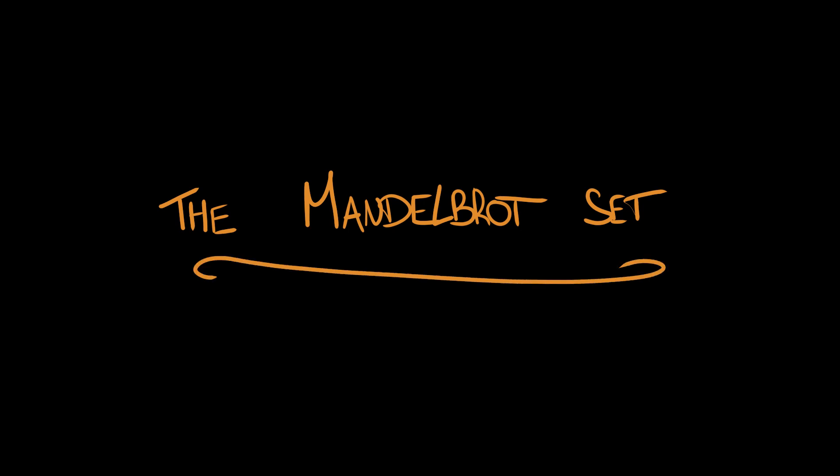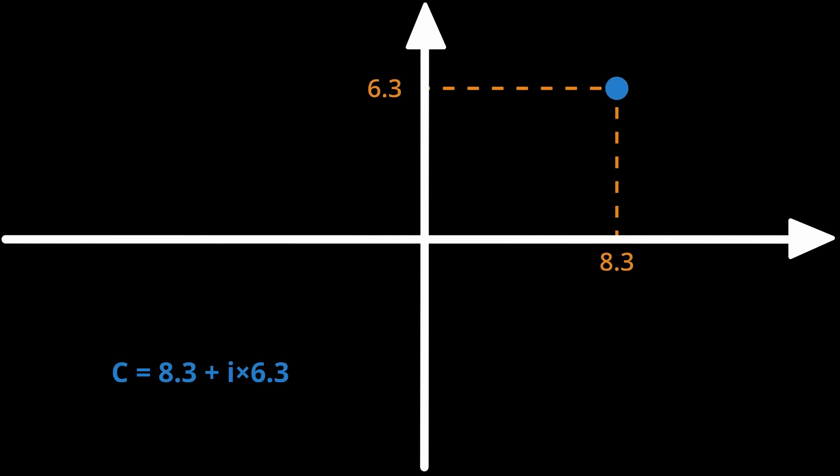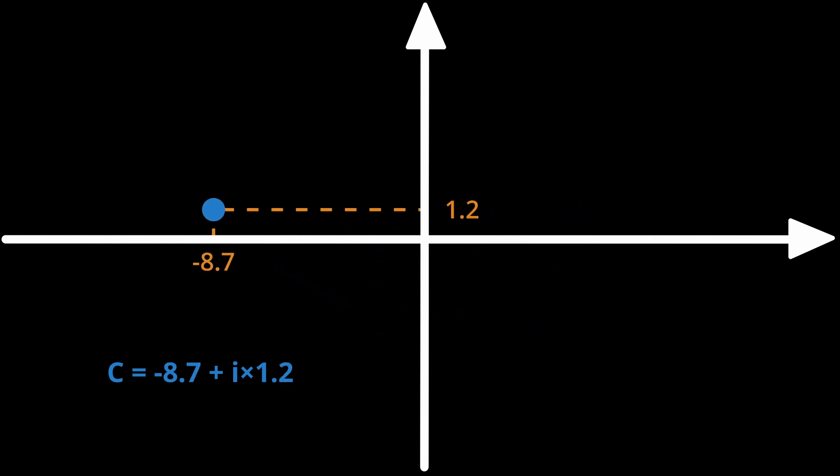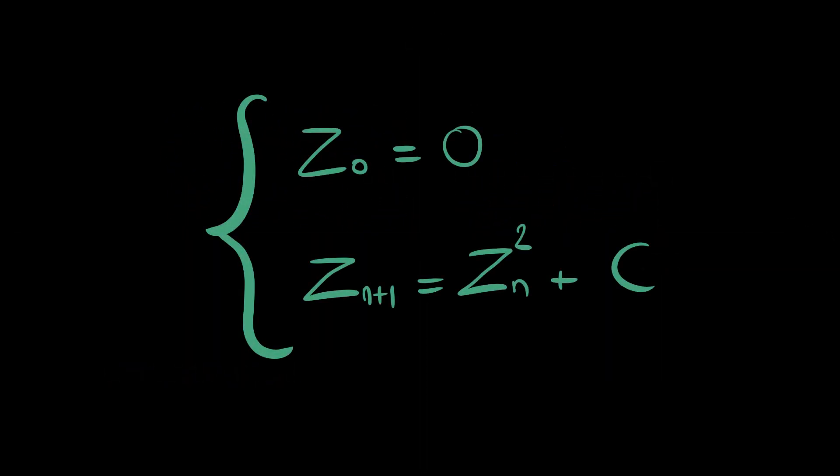From there I wanted to visualize the Mandelbrot set. The idea behind it is not that difficult. Let's consider a plane, like your screen for example. We can assign a value to each point depending on its position on each axis. Then we compute this sequence, which at each step gives another point in the plane. For example, with this point we have a sequence which goes to zero. And with this point, the sequence will go really far away — so we say it tends to infinity.